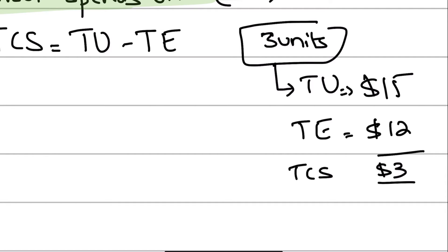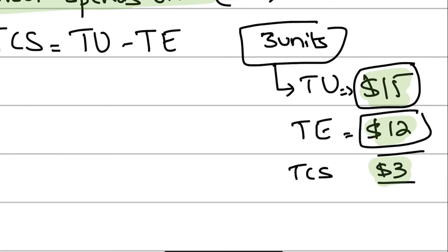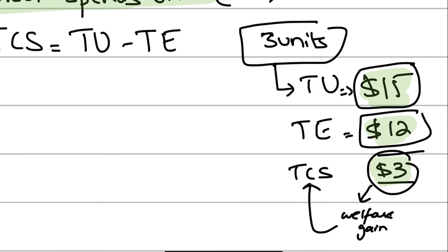So your total utility from consuming three units is fifteen dollars, minus the total expenditure of twelve dollars — you end up paying less for something worth more to you. The total consumer surplus is three dollars. It's the same concept as marginal consumer surplus, but here we're taking the aggregates. So total consumer surplus equals total utility minus total expenditure. Instead of rote-learning the formula, just understand the concept.